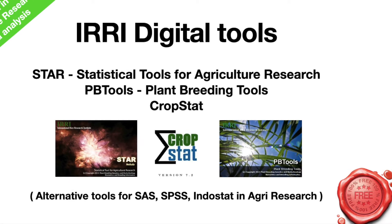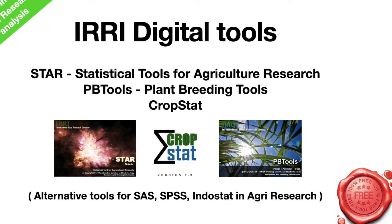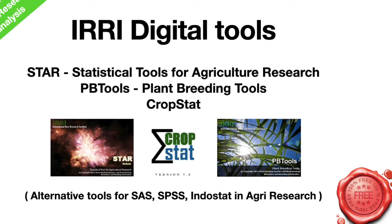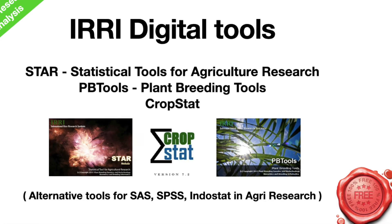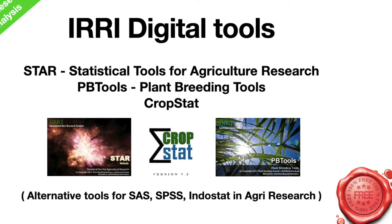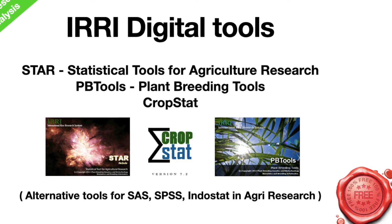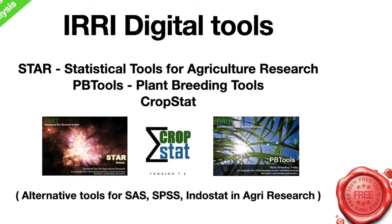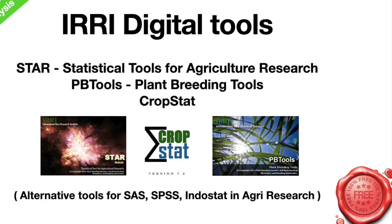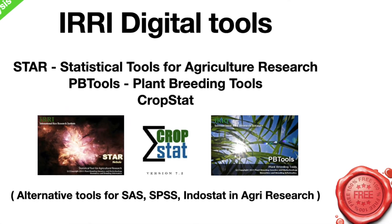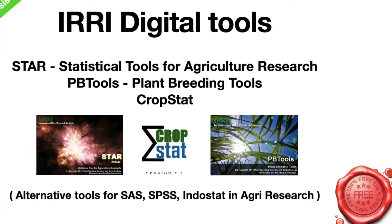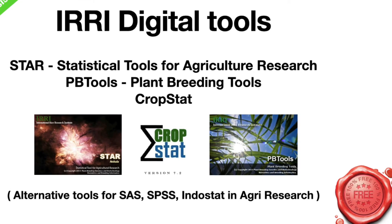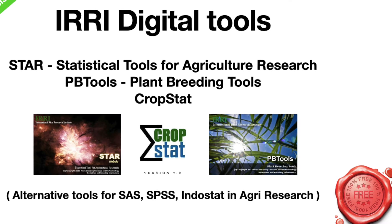There are three main apps on their website. Among them, STAR — which is an acronym for Statistical Tools for Agricultural Research — has more generalized designs such as CRD and RCBD. Then PBTools and CropStat have designs more oriented towards plant breeding.